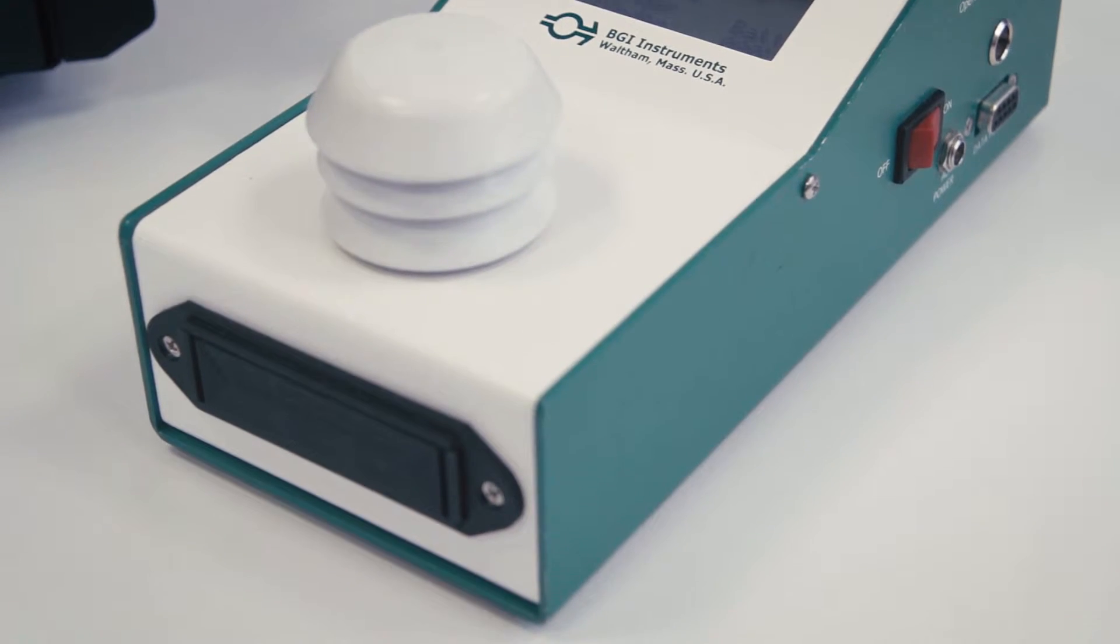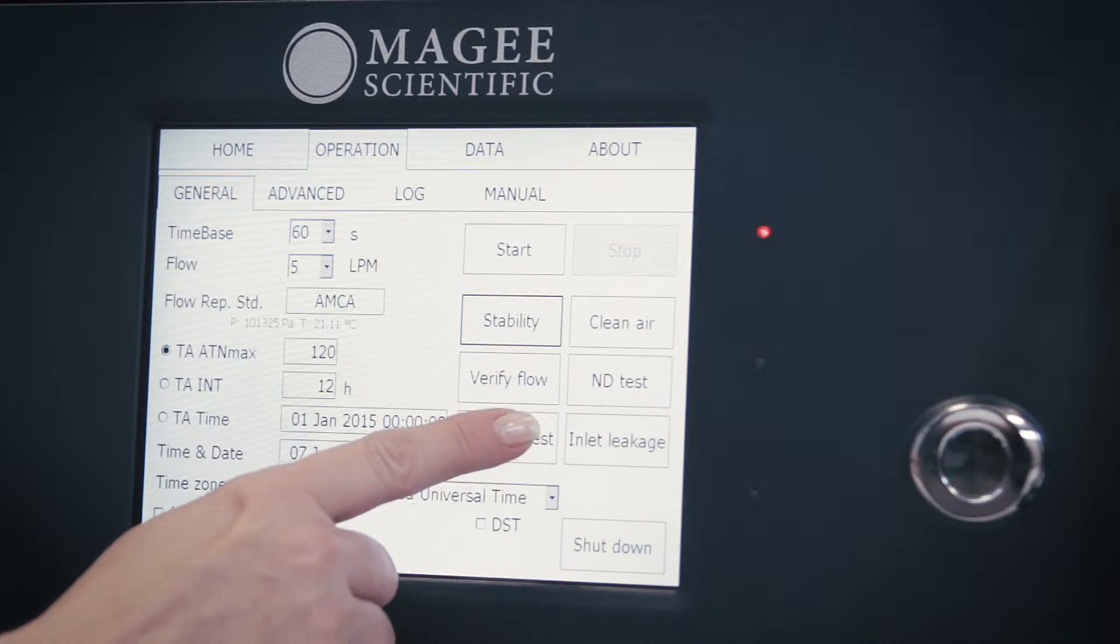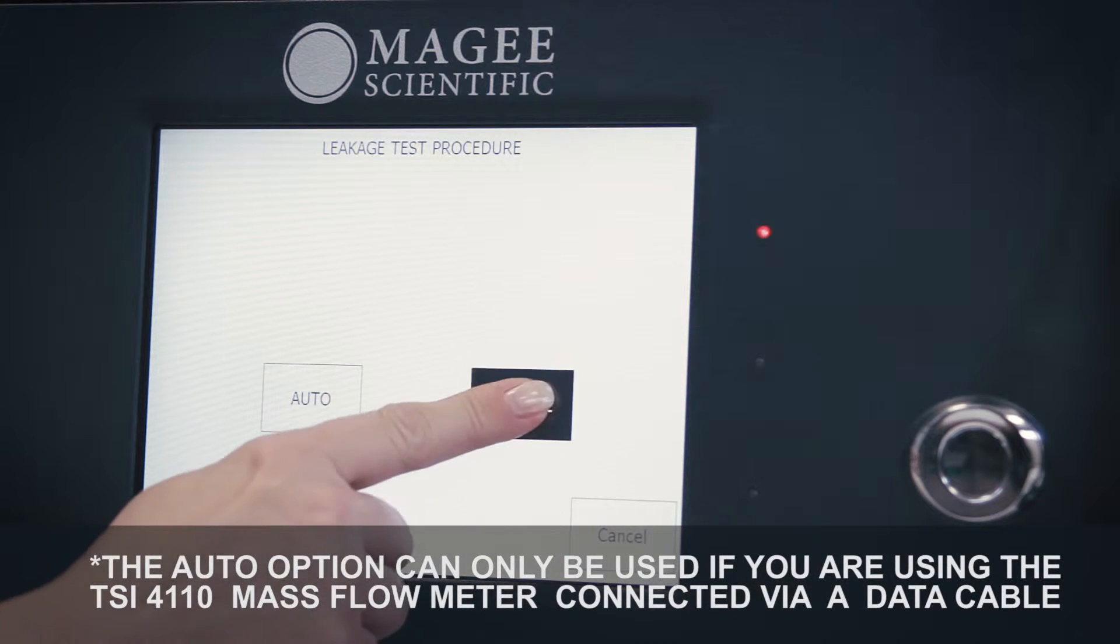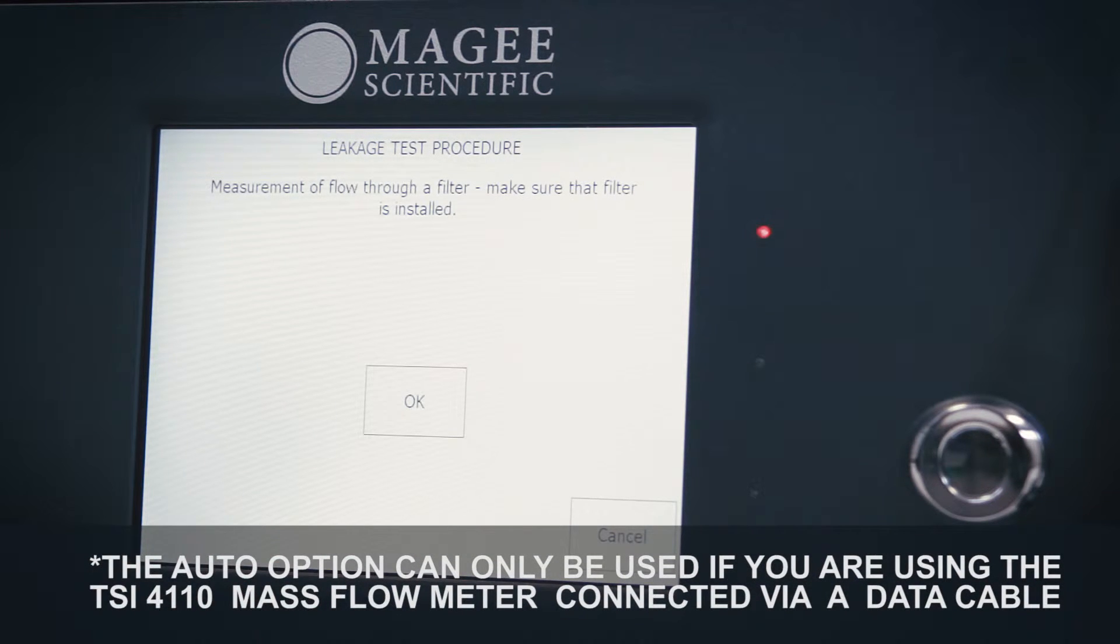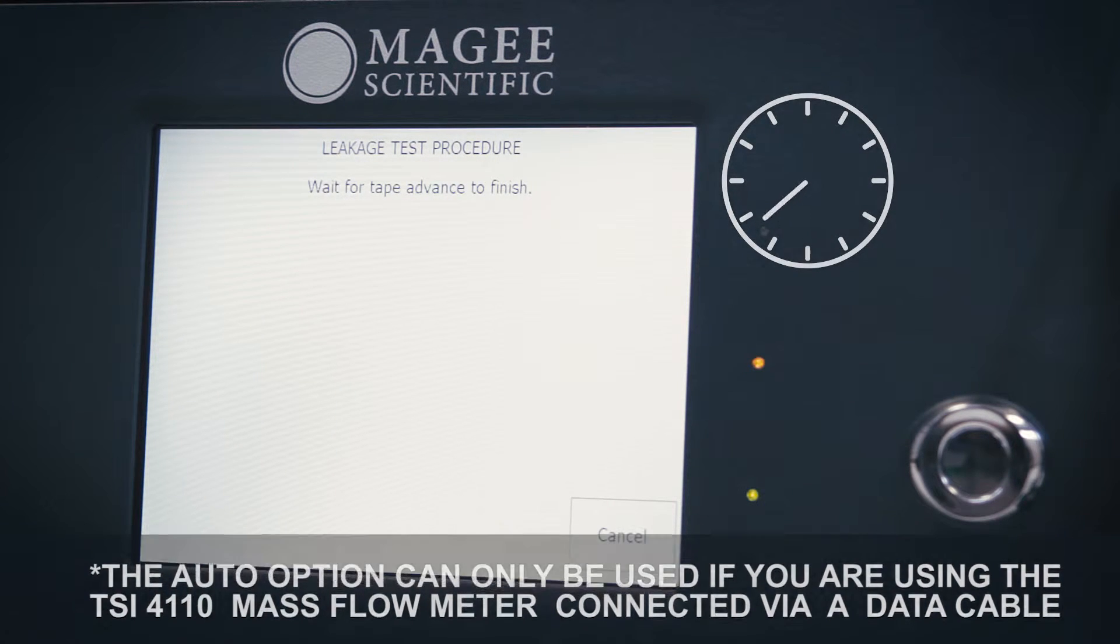Go to the Operation, General screen, and press the leakage test button to start the test. Choose Manual. Confirm by pressing the OK button. The instrument will first measure the flow through the filter tape.